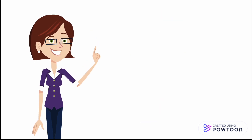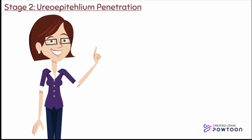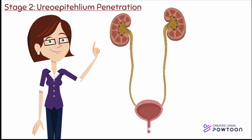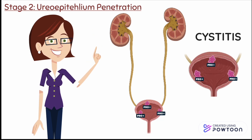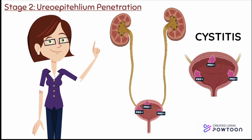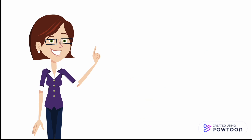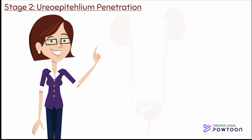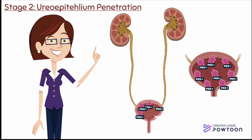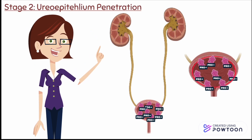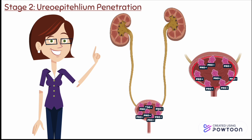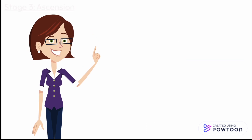The second stage is uroepithelium penetration. The bacteria attach to the bladder epithelial cells causing cystitis, otherwise known as an infection in the bladder. The bacteria then replicates and increases in number in order to penetrate the bladder and form a biofilm.